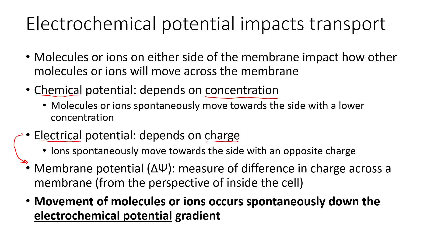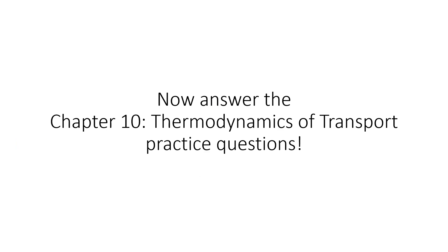When we combine chemical potential and electrical potential together into the electrochemical potential gradient, we can predict the movement of molecules and ions, because that movement will occur spontaneously down the electrochemical potential gradient — depending both on concentration and on the charges in the environments on either side of the membrane. Now that we've covered the concepts behind types of transport and the thermodynamics of transport, you are ready to answer the thermodynamics of transport practice questions.